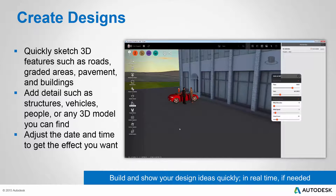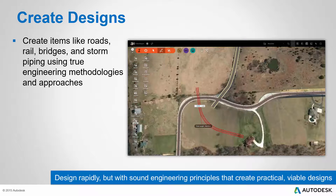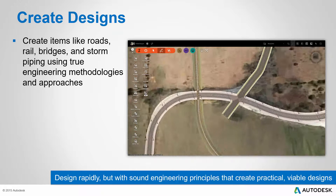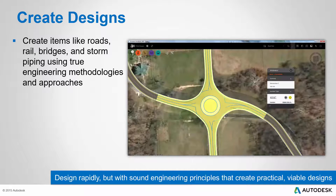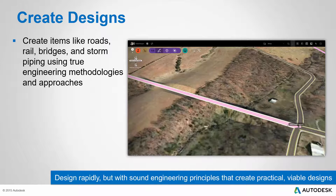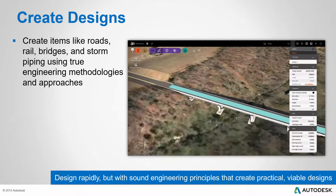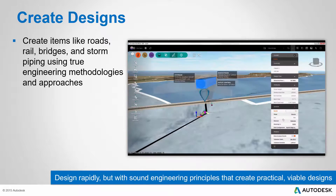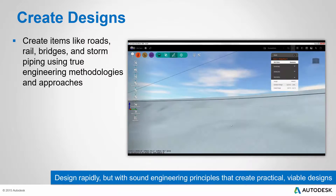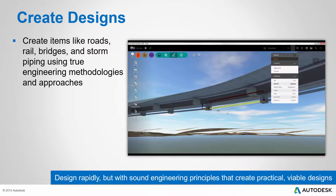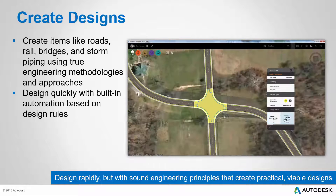These capabilities allow you to build and show your design ideas quickly, even in real time if the situation calls for it. Once you have sketched out a few items using the sketch tools, you can continue building your design with tools that employ real engineering methodologies and approaches. Here you can see the interaction between a rail design and a road design to create a crossing. And here a designer quickly switches from intersection to roundabout and then creates a bridge from one point to another by simply selecting two points. And here you can see a quick design of a culvert and eventually the addition of some pavement drainage on a design road.